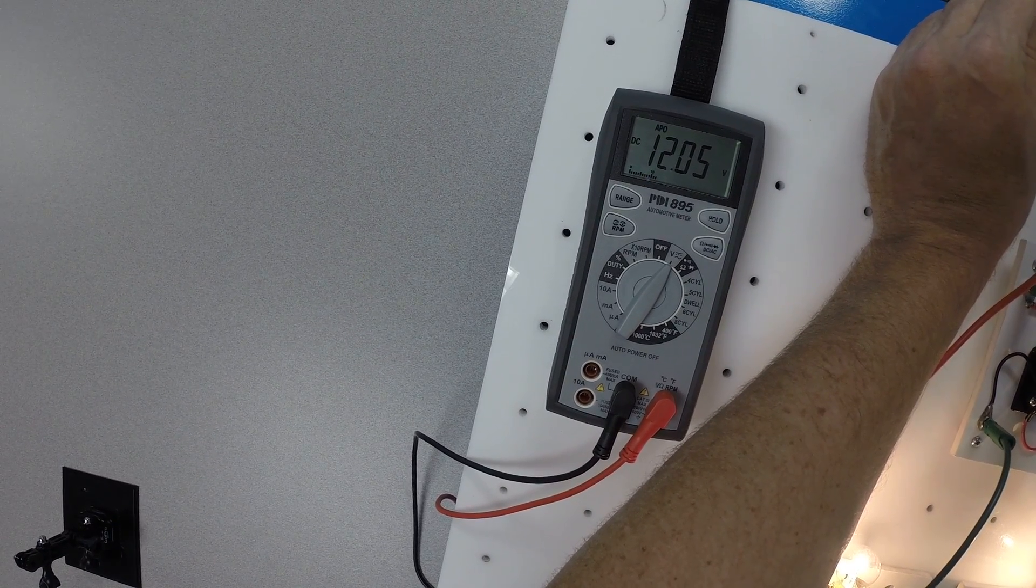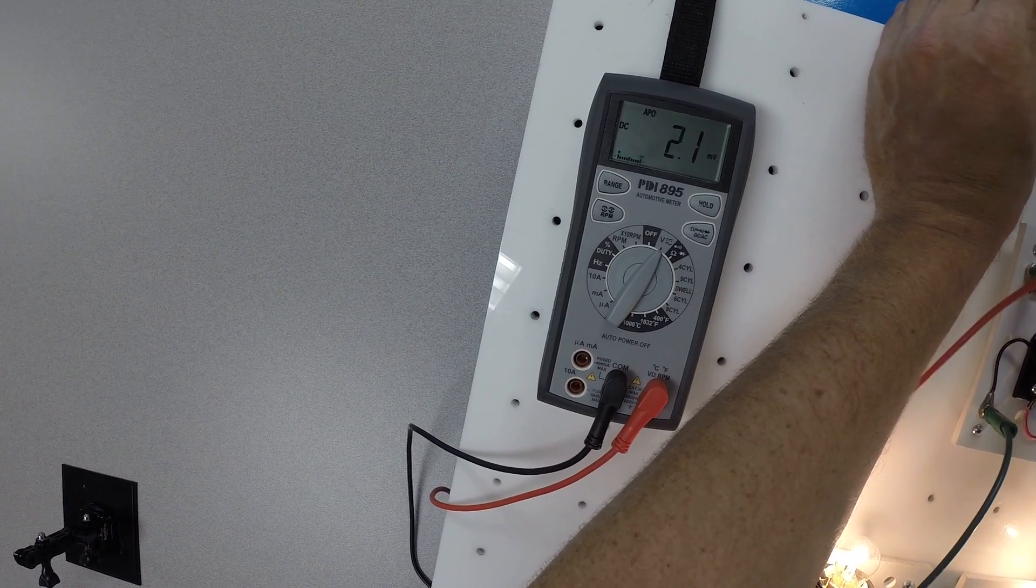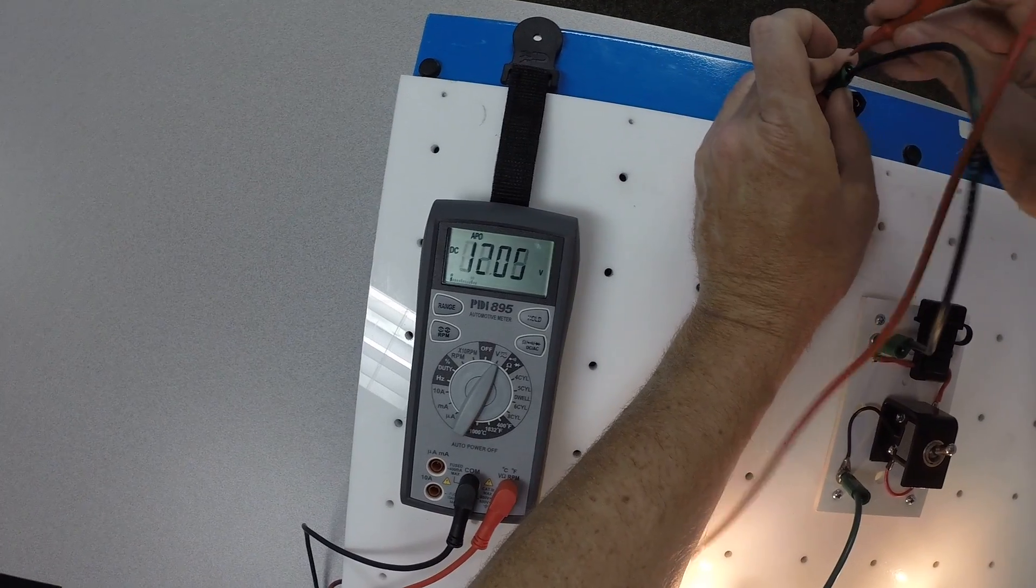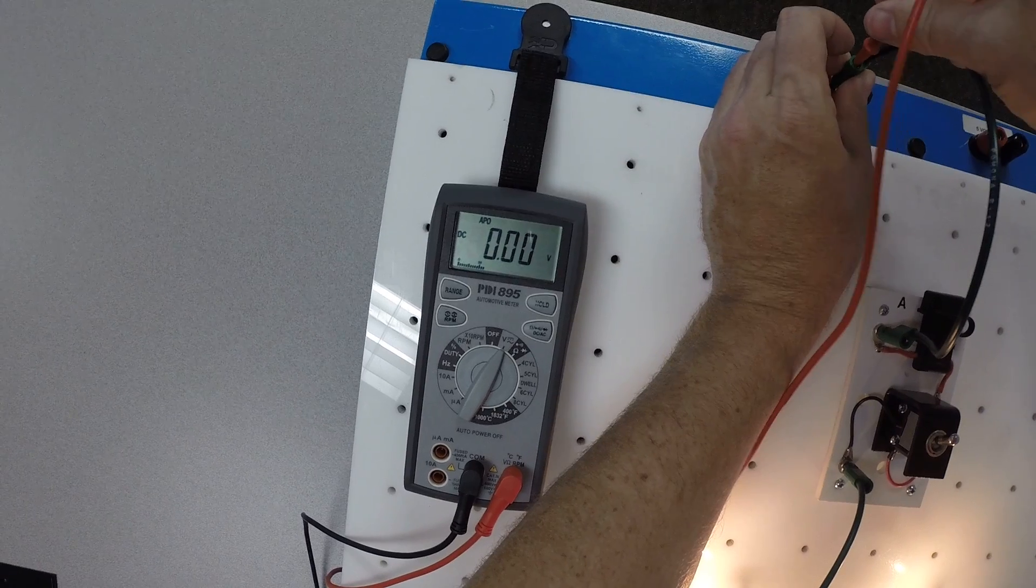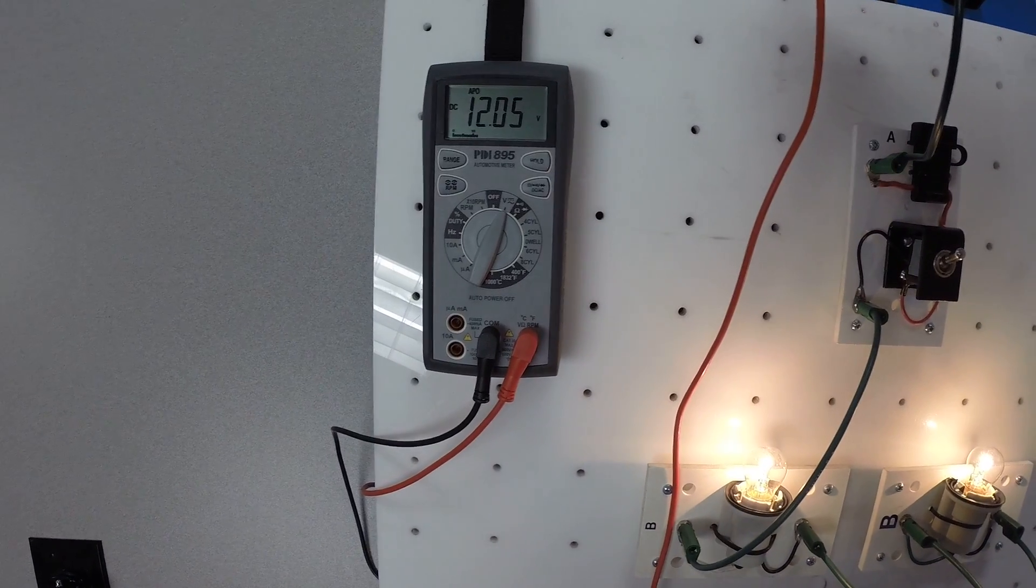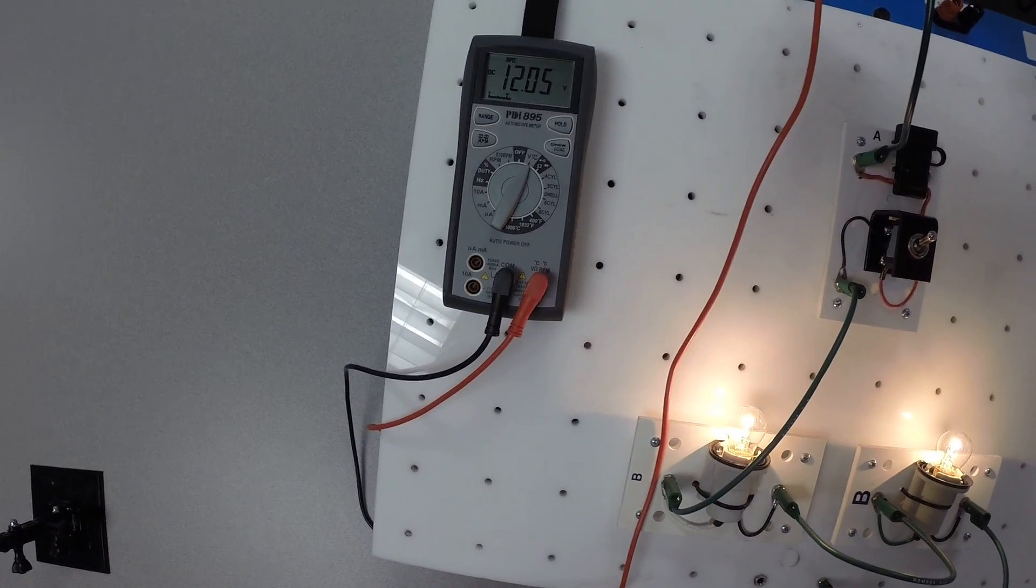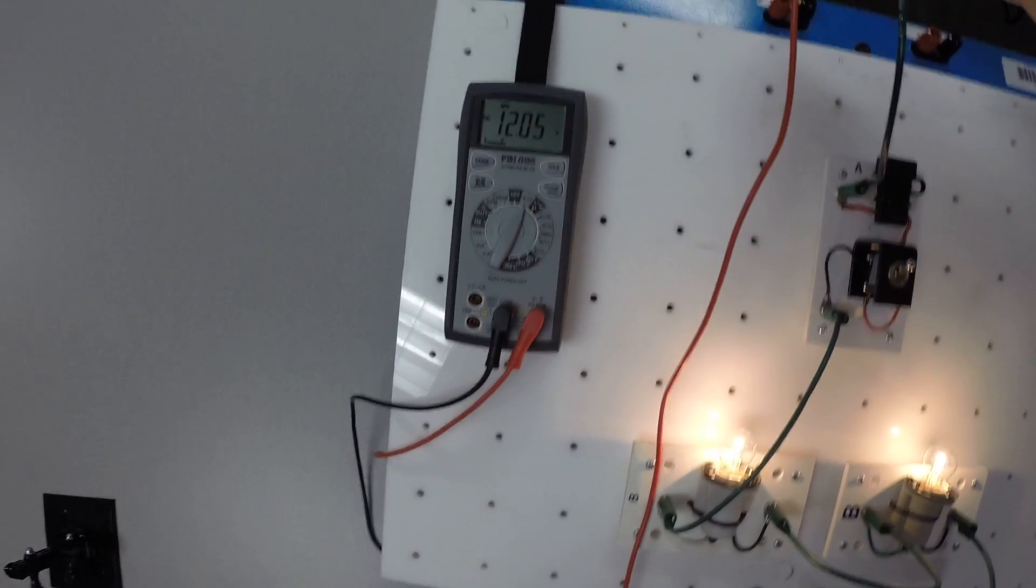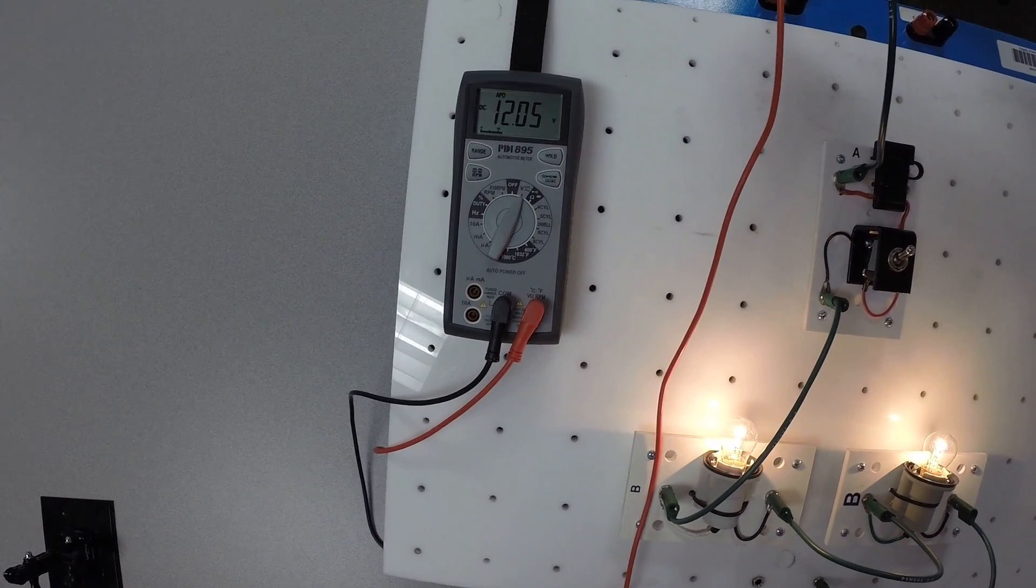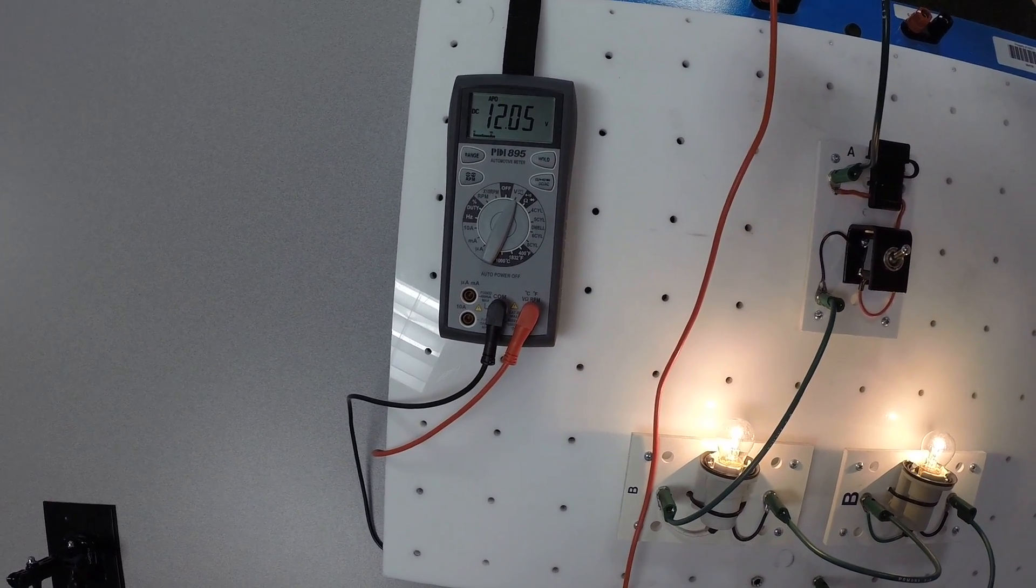As you may recall, we were dropping about, hold on a minute. I'm not making good contact. We were dropping about 6 volts in the one bulb, or across the one bulb, and about 6 volts across the other bulb. So that gives us our 12 volts. So it must be true. What Kirchoff says, the sum total of the voltage drops equals the source voltage.